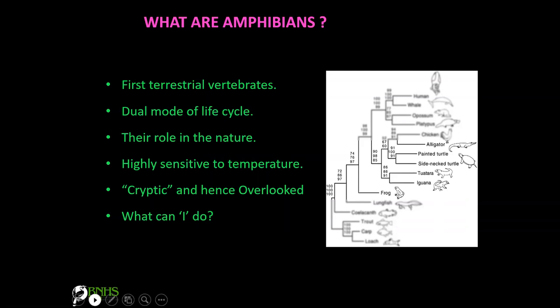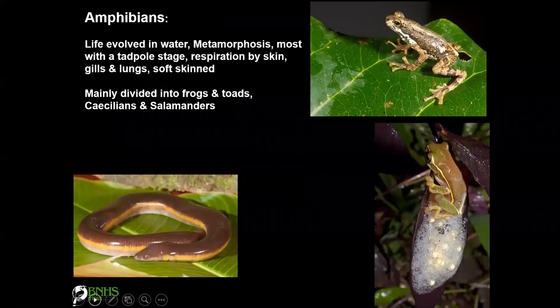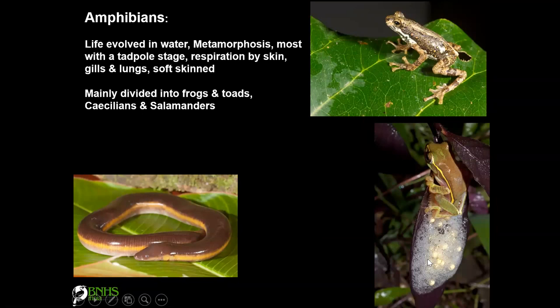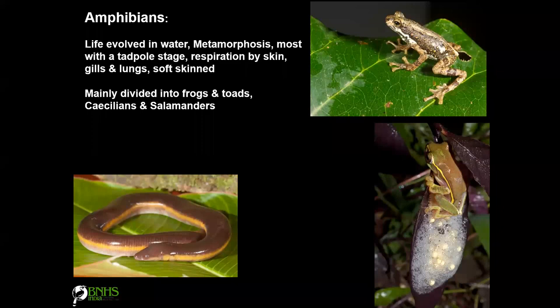Life evolved in water — amphibians lay eggs, then the tadpole develops, spending its life period in water. Respiration in tadpoles is by skin and gills, and they have very soft skin. Amphibians are mainly divided into three types: frogs and toads (Anura), caecilians (Apoda), and salamanders (Caudata).